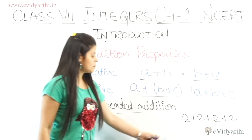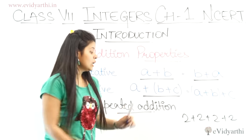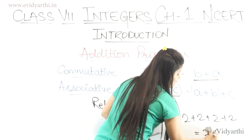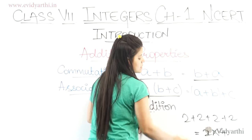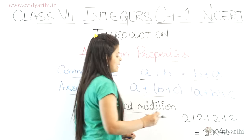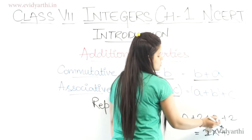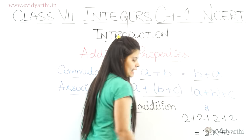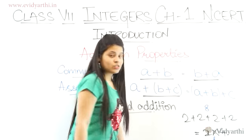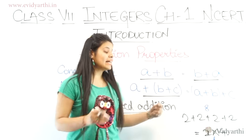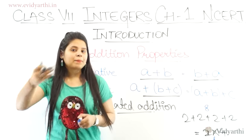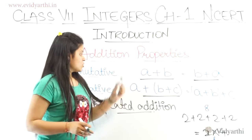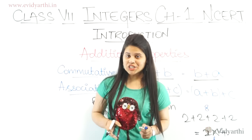If a number is added repeatedly — for example, 2 added 4 times: 2 plus 2 plus 2 plus 2 equals 8 — this is equal to 2 into 4, which is also 8. This is repeated addition: when you add the same number again and again, you can multiply that number by how many times you add it. This was about properties related to addition of integers.